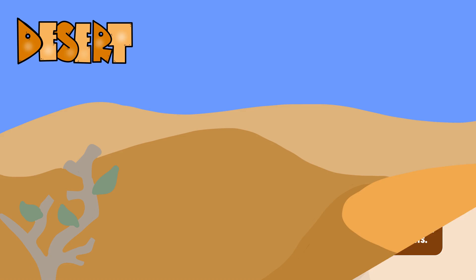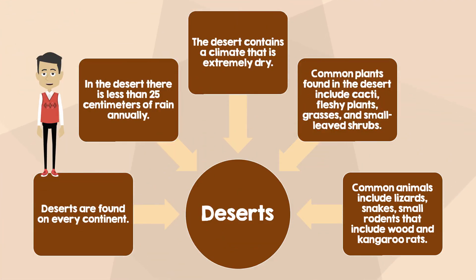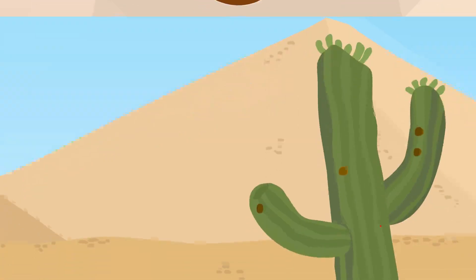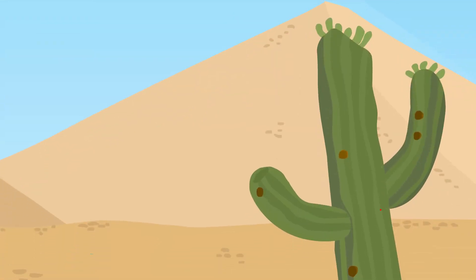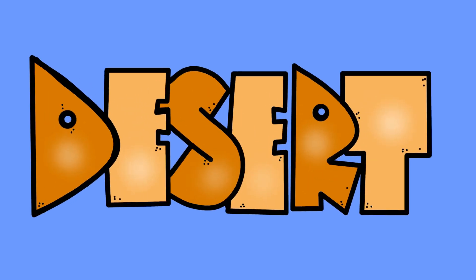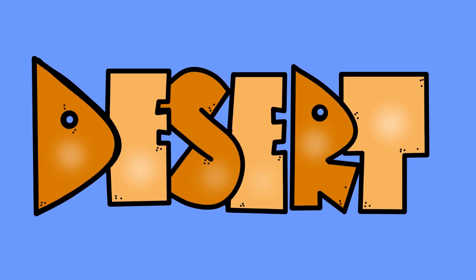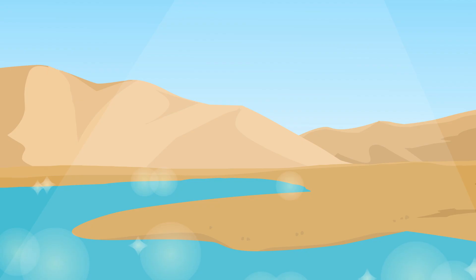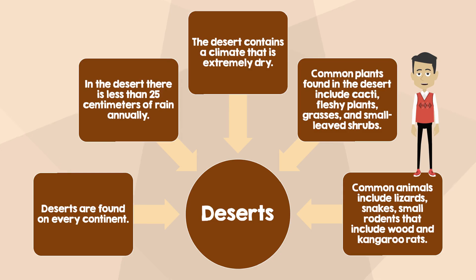Common plants found in the desert include cacti, fleshy plants, grasses, and small-leaved shrubs. Common animals include lizards, snakes, and small rodents that include wood and kangaroo rats.